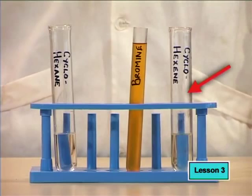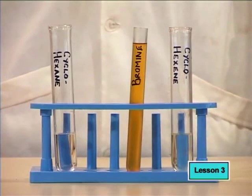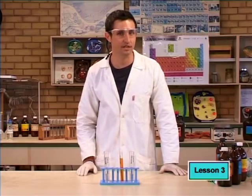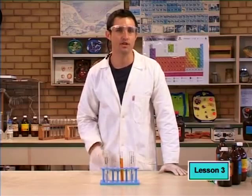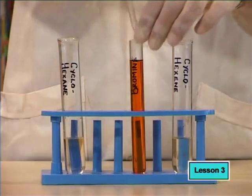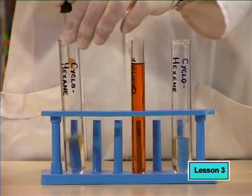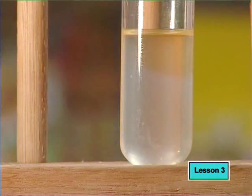We saw that cyclohexene and bromine reacted very quickly, much faster than our other reaction, and without exposure to UV light. So this must have been another type of reaction, not substitution. We also saw that cyclohexane and bromine did not react at first, but then reacted in UV light — this must be substitution. The quick reaction was addition. Since you already know about substitution, let's go back to the studio.